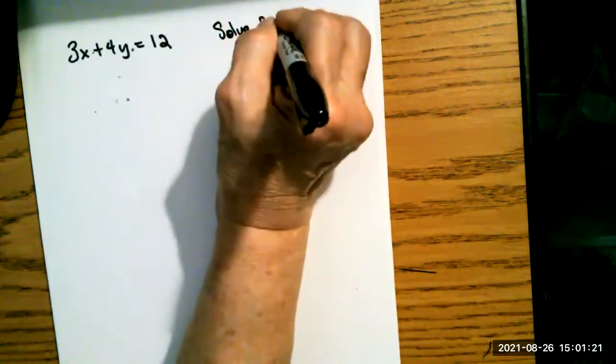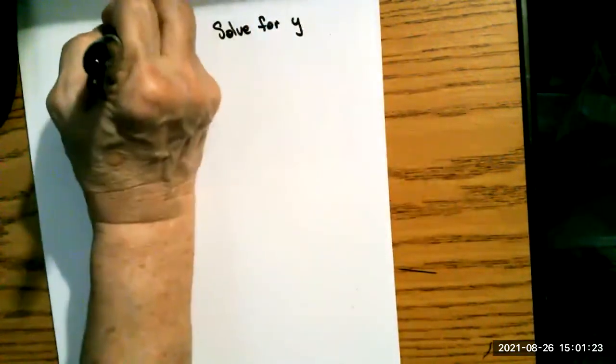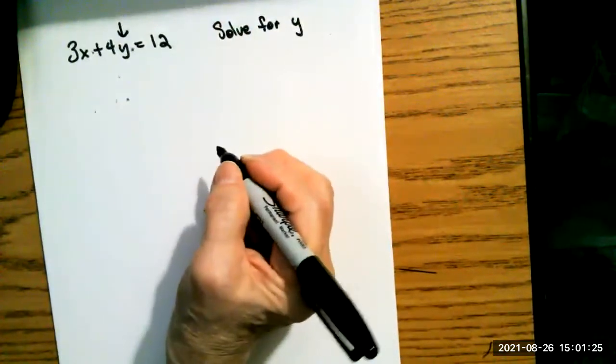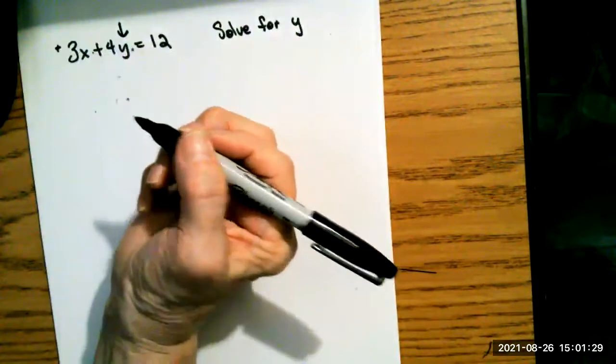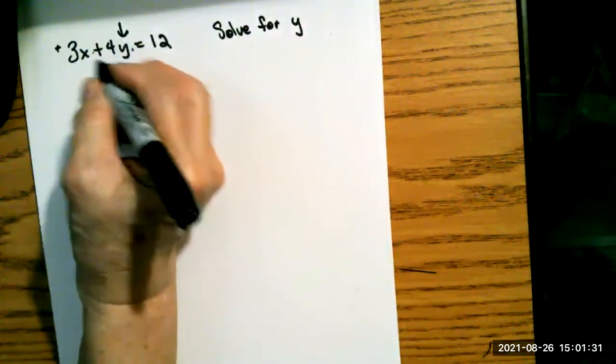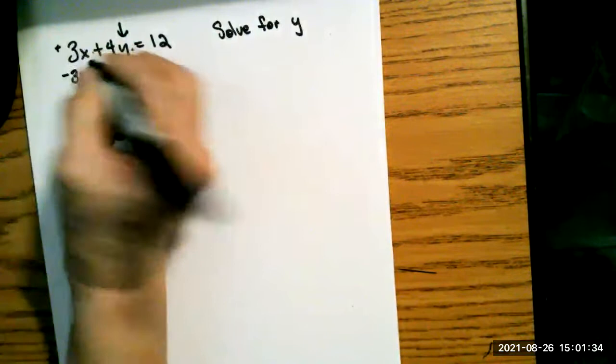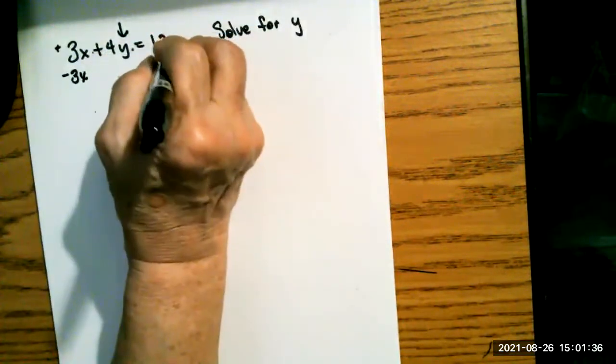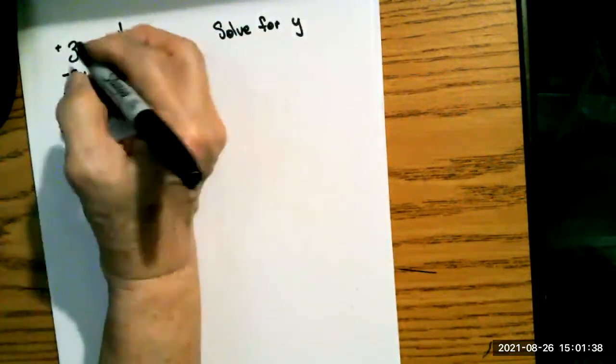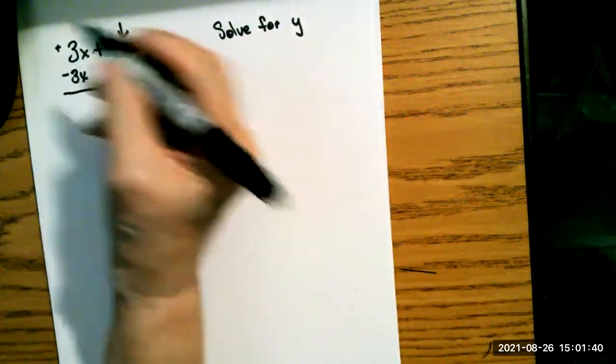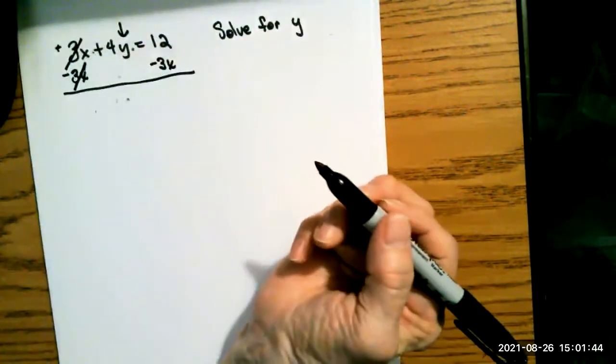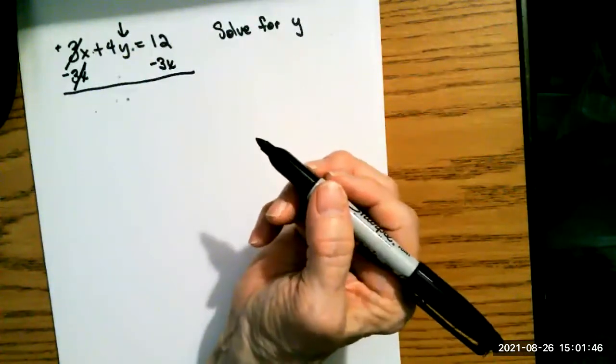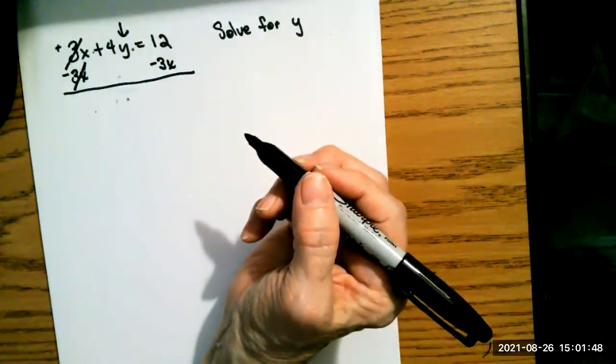Let's learn how to solve for y. I need this y by itself over here on the left side. The 3x is added. To get rid of it on this side, I would do the inverse operation, which is subtraction. So I would subtract this 3x from both sides. Now 3x minus 3x will be 0x, or just 0. So that would go away. We call it cancellation.